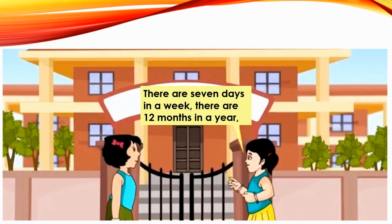So, the months start from January, February, March, April, May, June, July, August, September, October, November and December. So there are 12 months in a year.